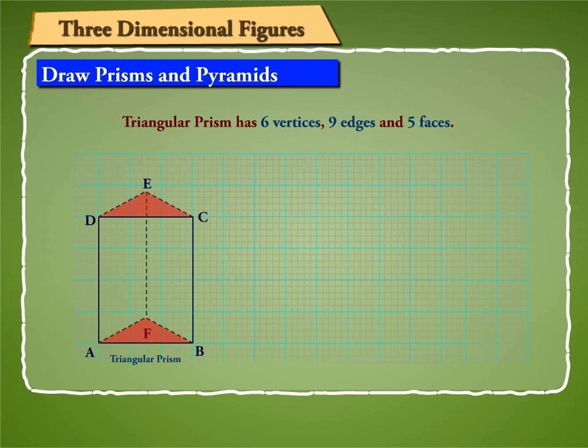Also, ABF and CDE are triangular faces, whereas ABCD, ADEF, and BFEC are its rectangular faces. ABCD is visible and others are hidden faces.